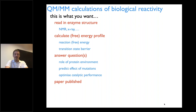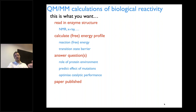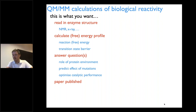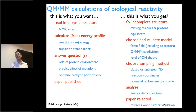From the survey and talking to people, what users want is something that can read in an enzyme structure from the PDB data bank and press a button to calculate the free energy profile, from which you can answer questions about reaction efficiency, the effect of the protein environment, and maybe design a mutant with higher performance and then publish a paper. I fully understand that is what people want. But what you get in practice is something else — you end up with an incomplete structure.